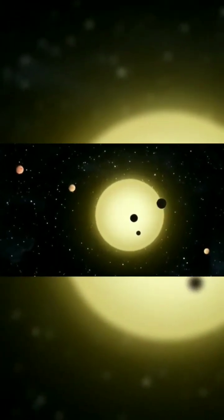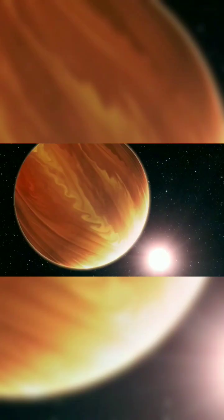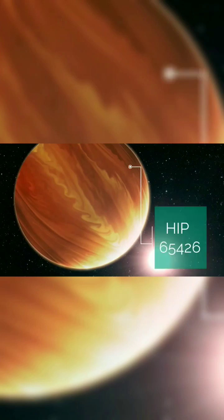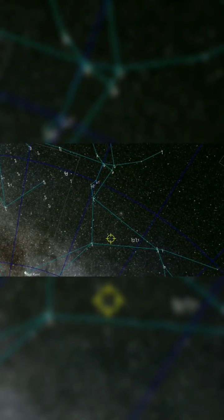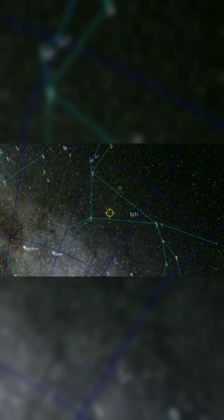Exoplanets are the planets which lie outside of the solar system. This planet is designated as HIP 65426. It is located in the Centaurus constellation and it is a super Jupiter.